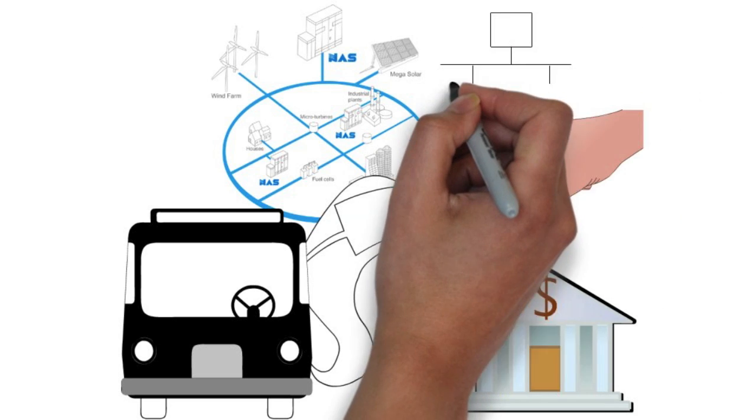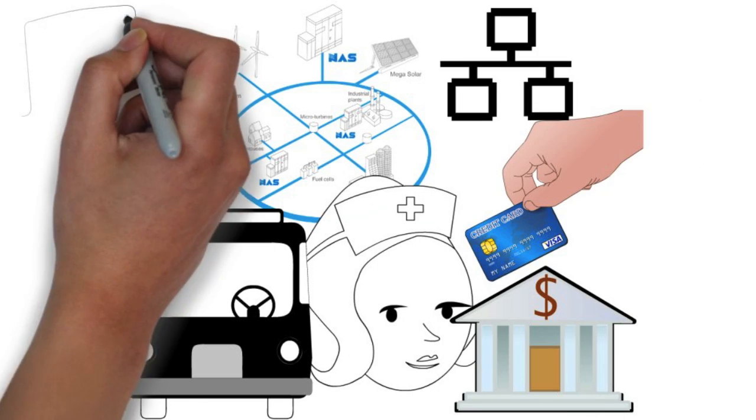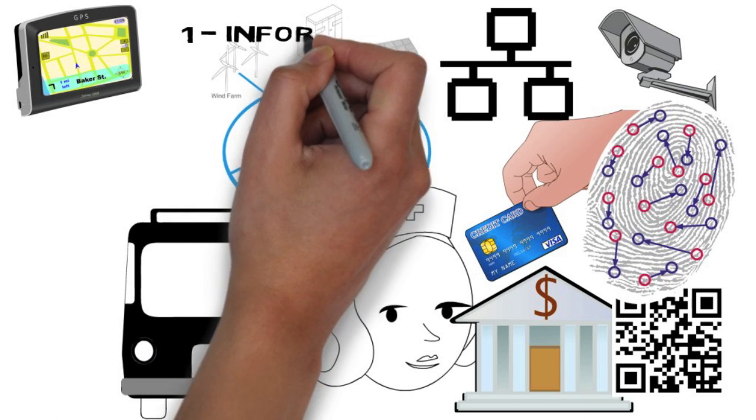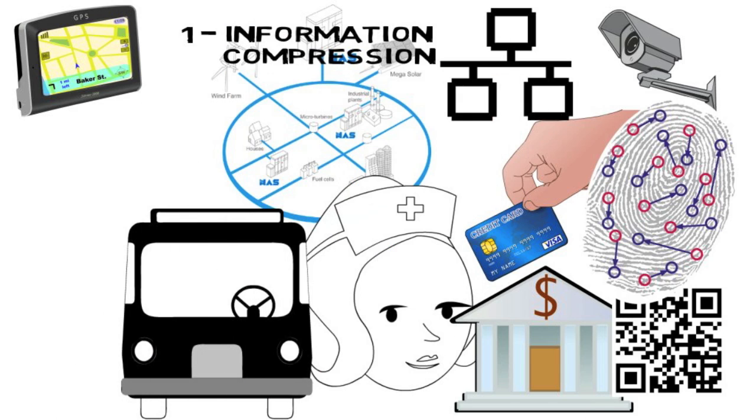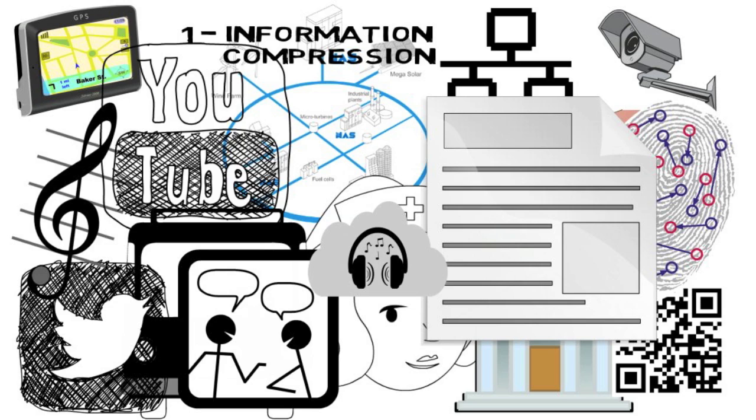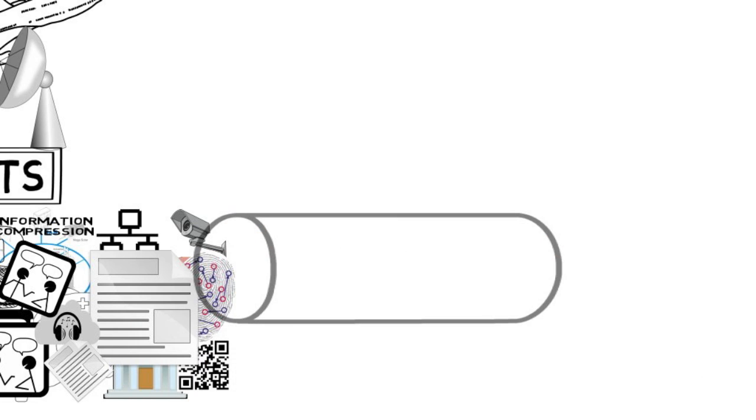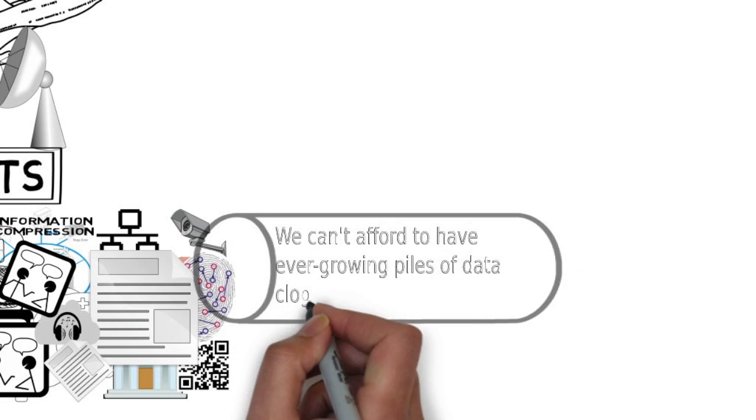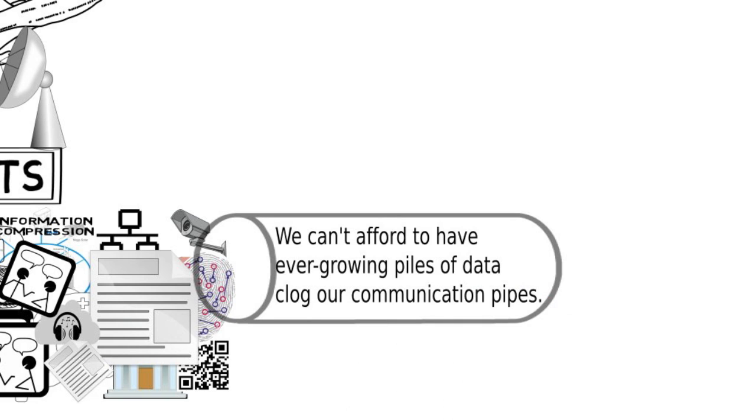What makes ASN-1 special and so broadly used? The answer is fourfold. One: information compression. The amount of chats, messages, documents, music, videos that we want to send and consume daily far surpasses the increase in bandwidth made available to us. We can't afford to have ever-growing piles of data clog our communication pipes.